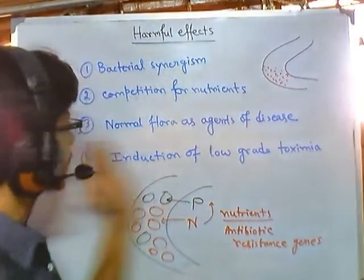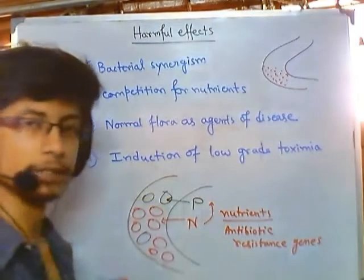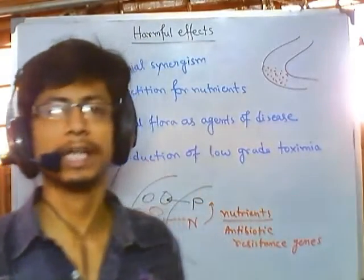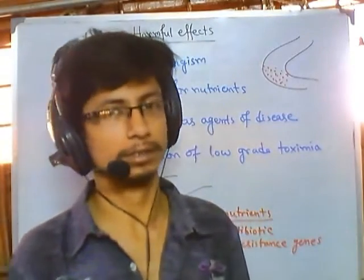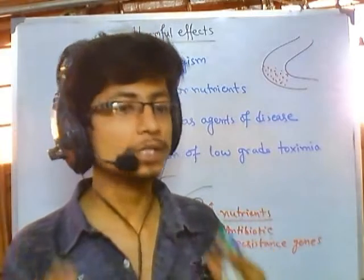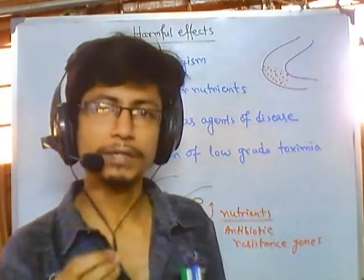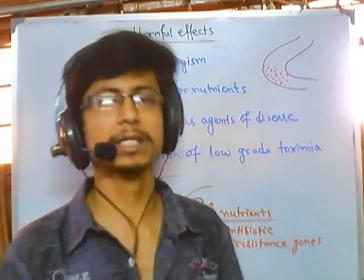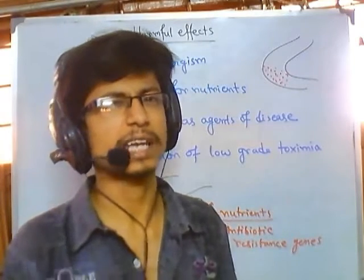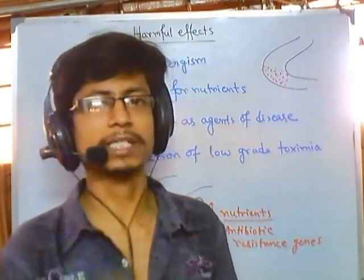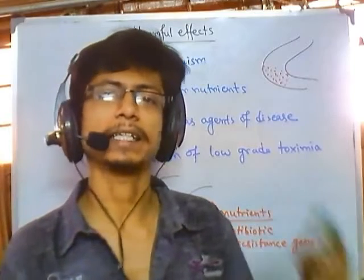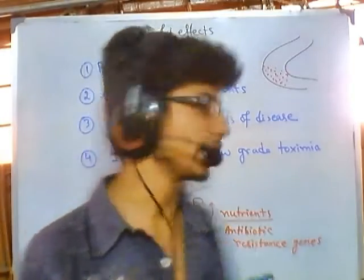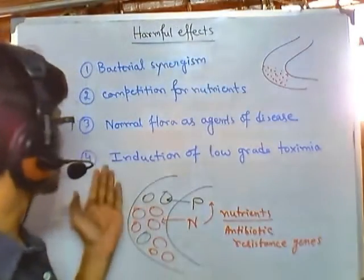In that situation, those normal flora are called opportunistic pathogens. They are opportunistic in nature — if they get an opportunity, such as reaching a place where immune system cells cannot normally reach, they will cause disease and establish infection there.